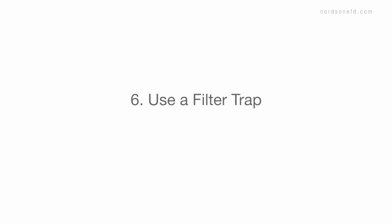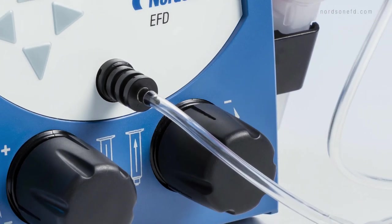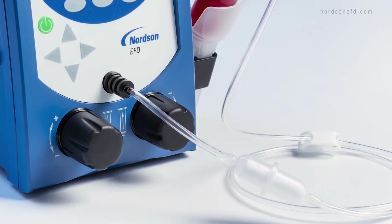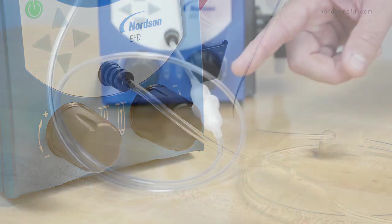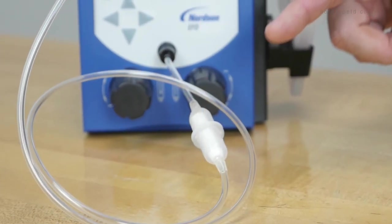Sixth, use a filter trap. Vacuum is great to prevent dripping, but be careful about suck back. As a last safety check, use a filter trap to prevent the CA from getting into your dispenser.